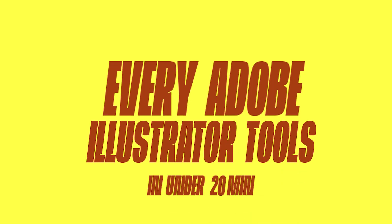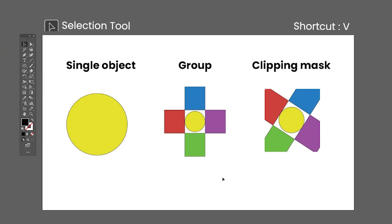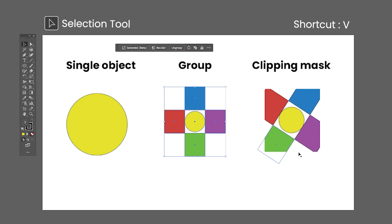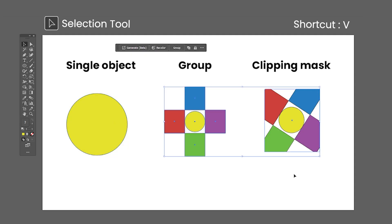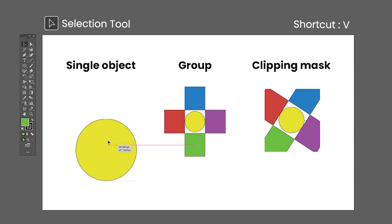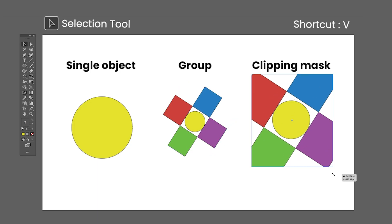Every Adobe Illustrator tool in under 20 minutes. The Selection tool is the most fundamental Illustrator tool and the one you spend the most time with. Shortcut is the letter V, used to make selections of entire objects, groups, and clipping masks, either by clicking or dragging. This tool is also used to move, scale, rotate, and round corners.